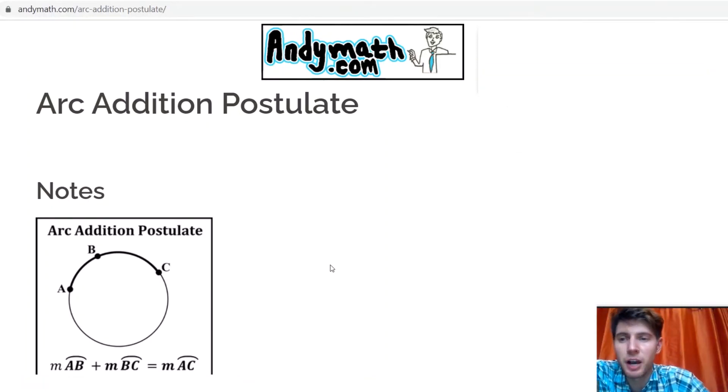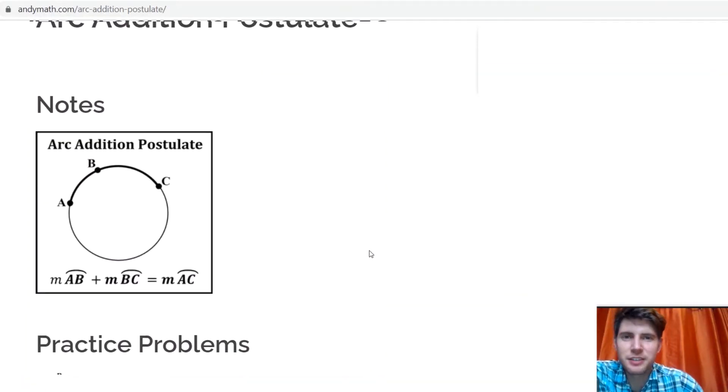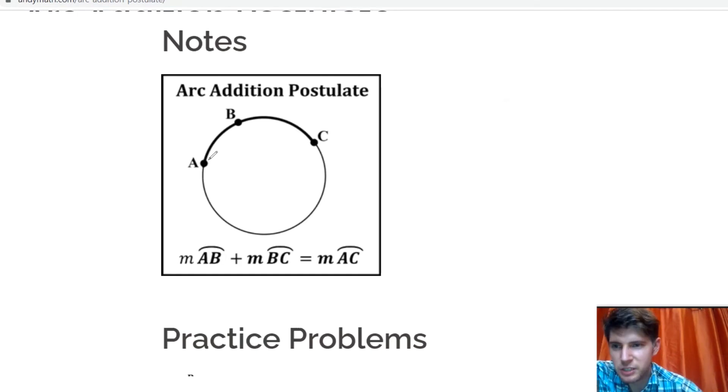All right, the arc addition postulate. What it says is if you have a small piece of an arc, AB, plus the measure of this piece of the arc, it's equal to the whole thing. So it kind of makes sense. The two parts add up to the whole.